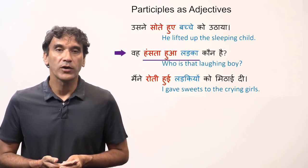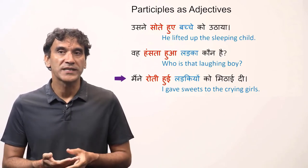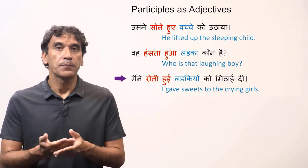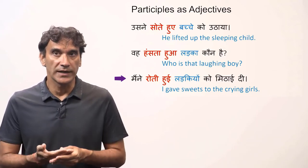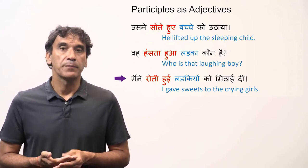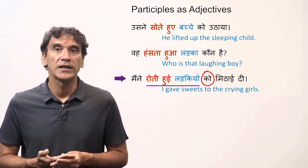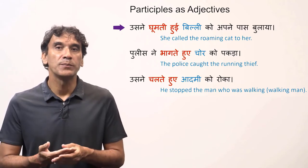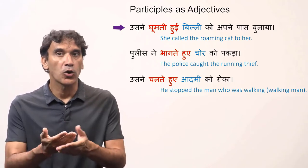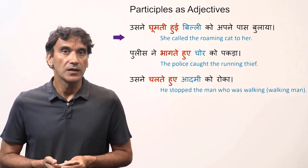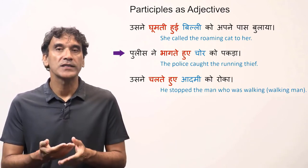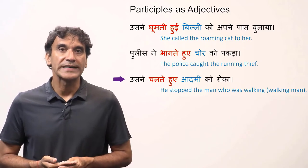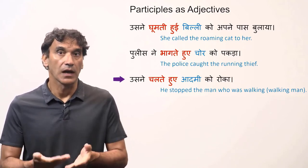'Maine roti hui ladkiyon ko mithai di' means 'I gave sweets to the crying girls'. The participle with the noun is 'roti hui ladkiyan', meaning 'crying girls', and because there is a postposition 'ko', it becomes 'roti hui ladkiyon ko'. 'Usne ghoomti hui billi ko apne paas bulaya' means 'she called the roaming cat to her'. 'Police ne bhaagte hue chor ko pakda' means 'the police caught the running thief'. 'Usne chalte hue aadmi ko roka' means 'he stopped the man who was walking'.